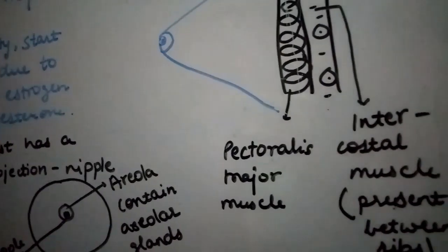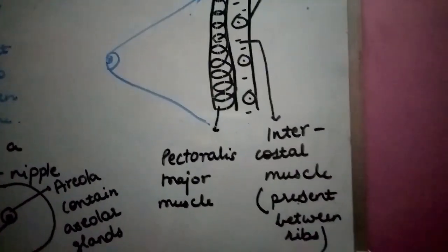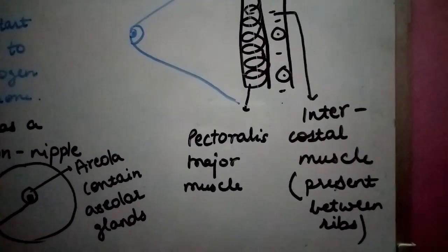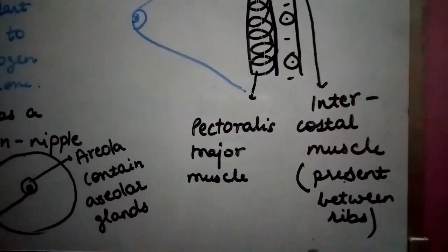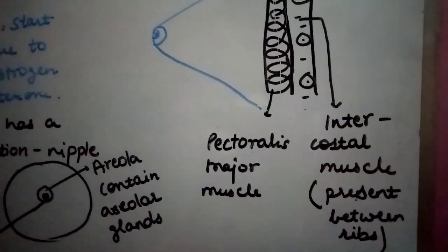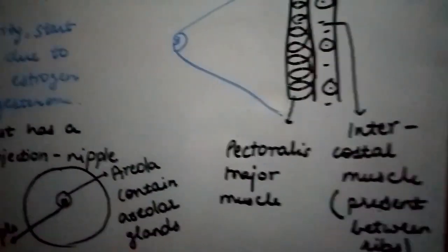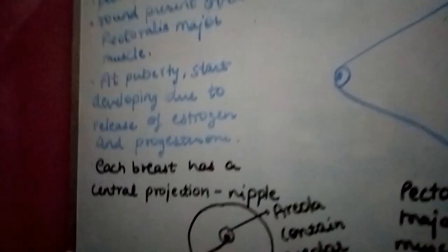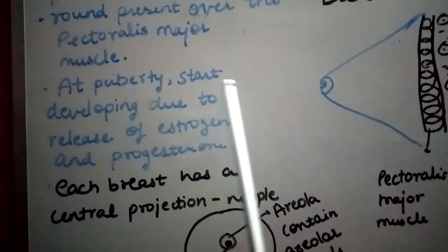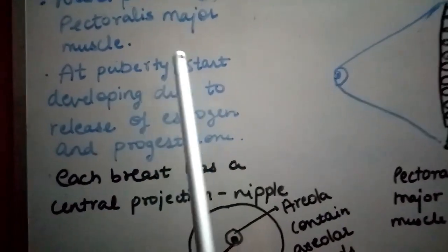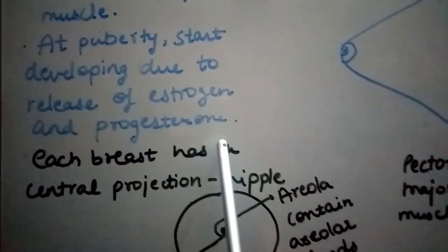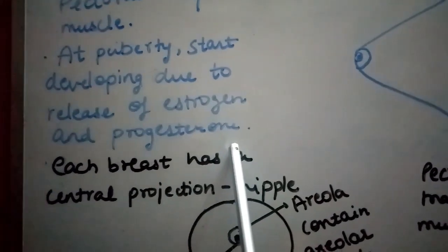Breasts remain rudimentary in males. In females, they remain undeveloped until puberty, but after puberty they start developing due to the release of estrogen and progesterone hormones.